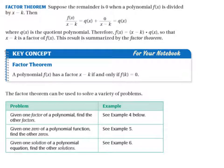We're continuing on with lesson 2.5, part two. We finished the first three examples and now we're looking at the fourth example. With the fourth example, we actually use synthetic division to factor a polynomial completely when we can't do it by hand — when we can't factor with the other methods we've learned.